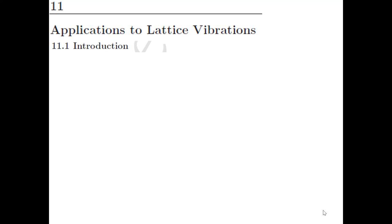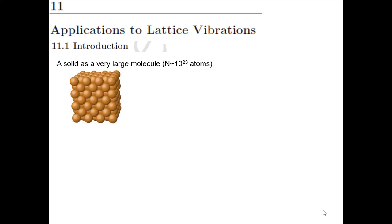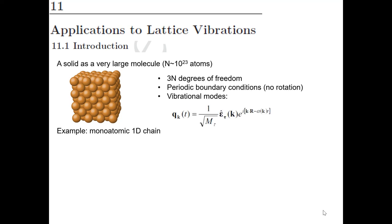These tools can be applied both for electronic states and for vibrational states. We start this chapter with a brief review on lattice vibrations and phonons. A good starting point is to consider a solid initially like a very big molecule — a molecule with 10 to the 23 atoms or something like that.